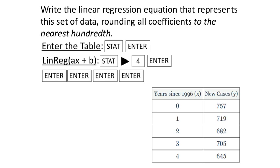Write the linear regression equation that represents this set of data, rounding all coefficients to the nearest hundredth. I'm going to enter the table in. I'll make this my list one, which will be my x values, and then the new cases will be my second list.